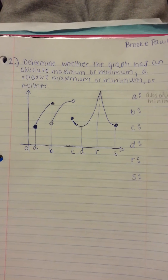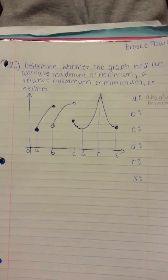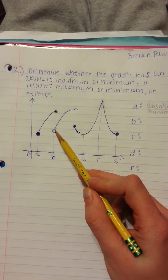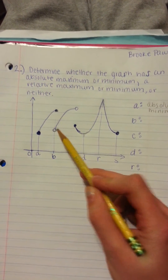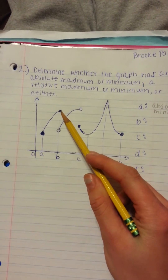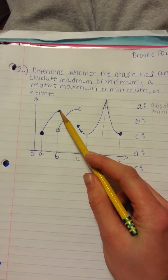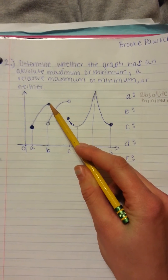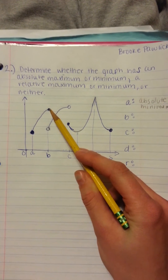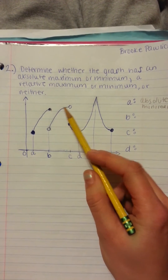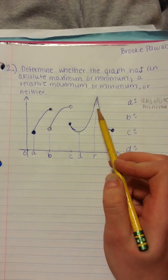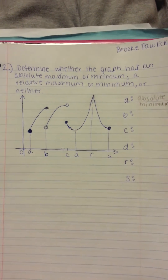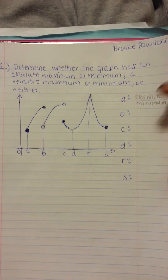For point B, we cannot look at this open circle since it's not continuous, but if we look above at this closed circle right here, we can tell it's a maximum. And since it's not the highest value on the graph, it's going to be a relative maximum.